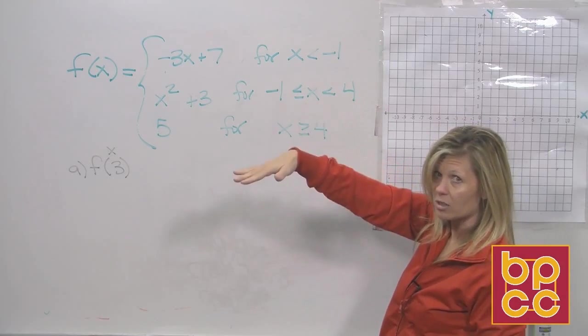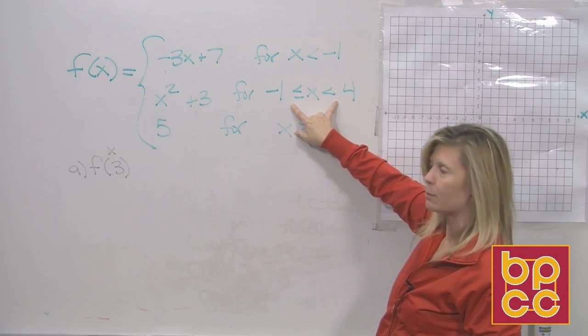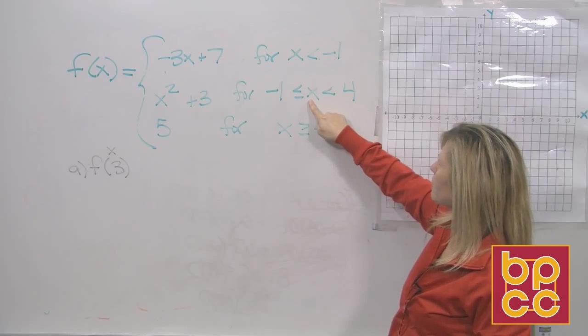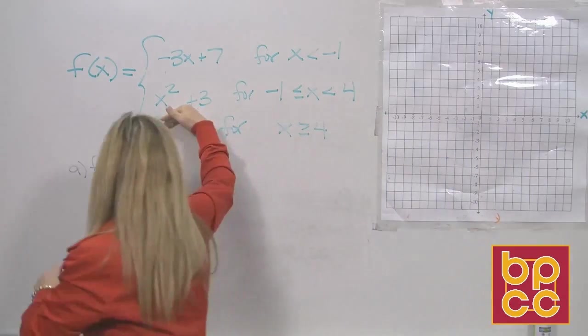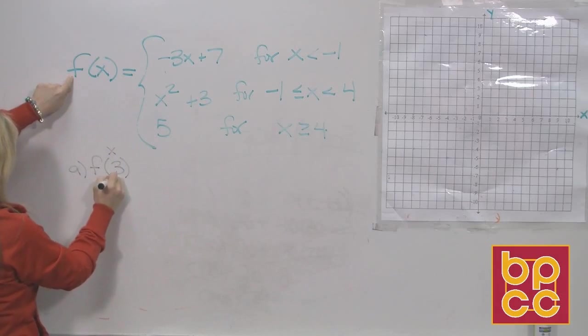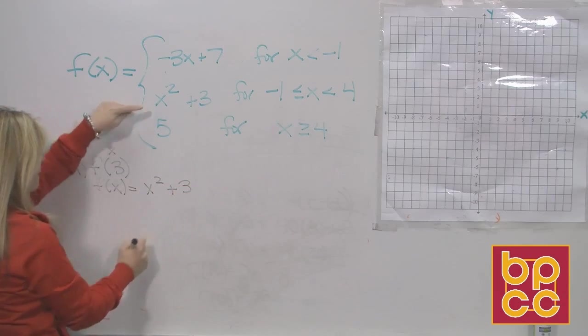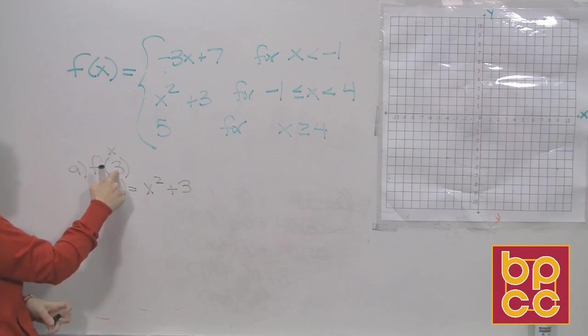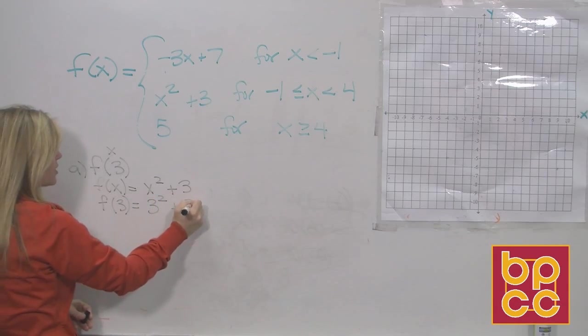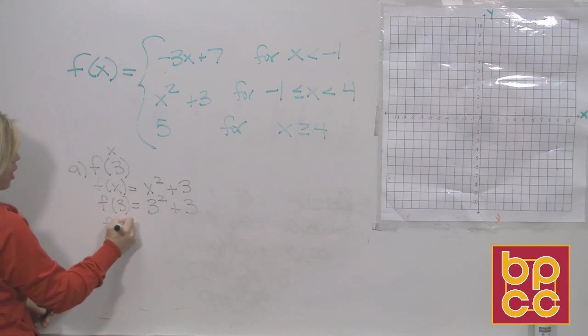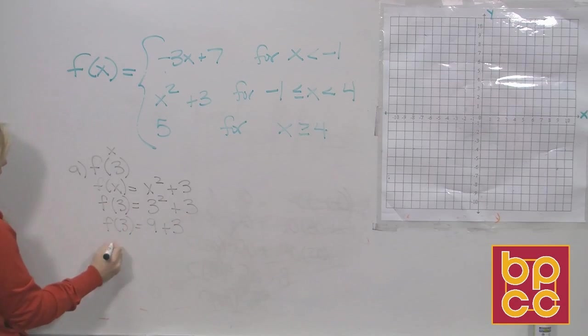Remember, we talked about this a long time ago. In the beginning modules, x is sandwiched between these two numbers. It means it's in between. Yes, 3 is in between negative 1 and 4. So we are going to use this piece, this equation. So we're going to write f of x equals x squared plus 3. We're going to replace x with the number we're using, 3. So f of 3 equals 3 squared plus 3. And then we're going to do our arithmetic and work that out. 3 squared is 9. 9 plus 3 is 12.